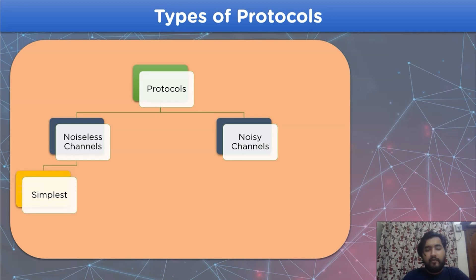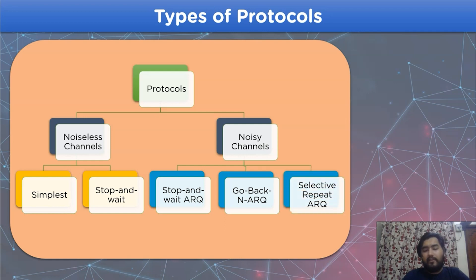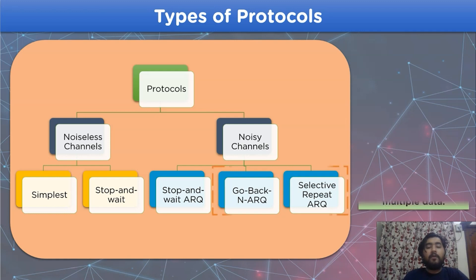Noiseless channels can be divided into two types: simplest type and stop-and-wait type. Whereas noisy channels are divided into three subdivisions: stop-and-wait ARQ, go-back-N ARQ, and selective repeat ARQ. In the noisy channel, go-back-N ARQ and selective repeat ARQ are the ones that apply the sliding window protocol for data transmission over the network channel.